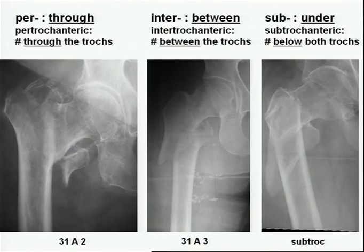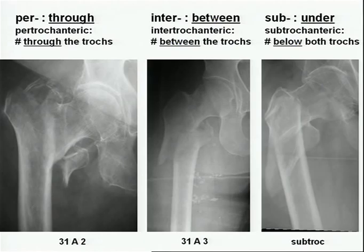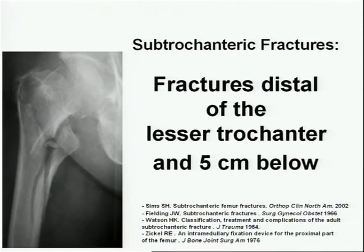Only in the sub — which means under — the fracture has to be below both trochanters. If that is mingled together and not separated from each other, it's hard to compare scientifically, and it nearly makes evidence-based medicine impossible.